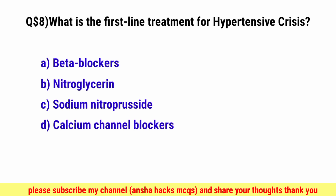Question No. 38. What is the first-line treatment for hypertensive crisis? The correct option is C, Sodium nitroprusside.